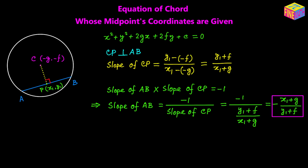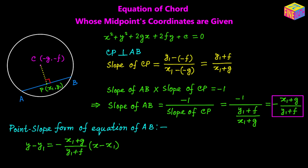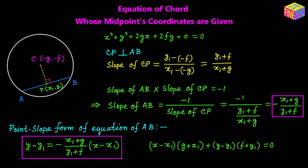We now know the slope of chord AB and also a point on the chord — point P with coordinates x sub 1 comma y sub 1. Using the point-slope form of the equation of a straight line, the equation of chord AB is: y minus y sub 1 equals negative (x sub 1 plus g) over (y sub 1 plus f) times (x minus x sub 1). It can also be written as: (x minus x sub 1)(g plus x sub 1) plus (y minus y sub 1)(f plus y sub 1) equals 0.